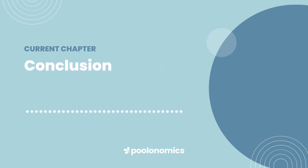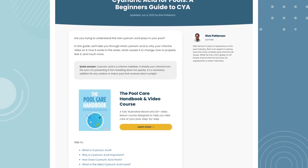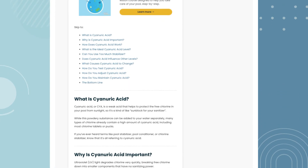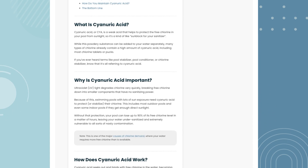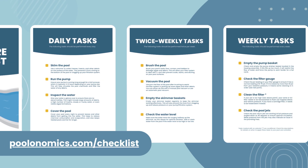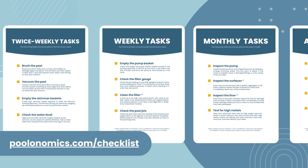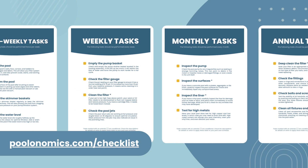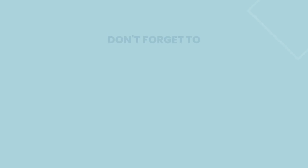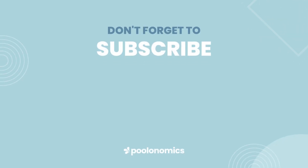So there you have it — a complete overview and beginner's guide to cyanuric acid in your pool. Check the description below for links to our full companion article, along with supporting articles for many of the points discussed in the video. We also have a free, downloadable and printable checklist to help with your pool maintenance schedule. You can get it for free at poolonomics.com/checklist. Thanks for watching and don't forget to subscribe for all things pool care.